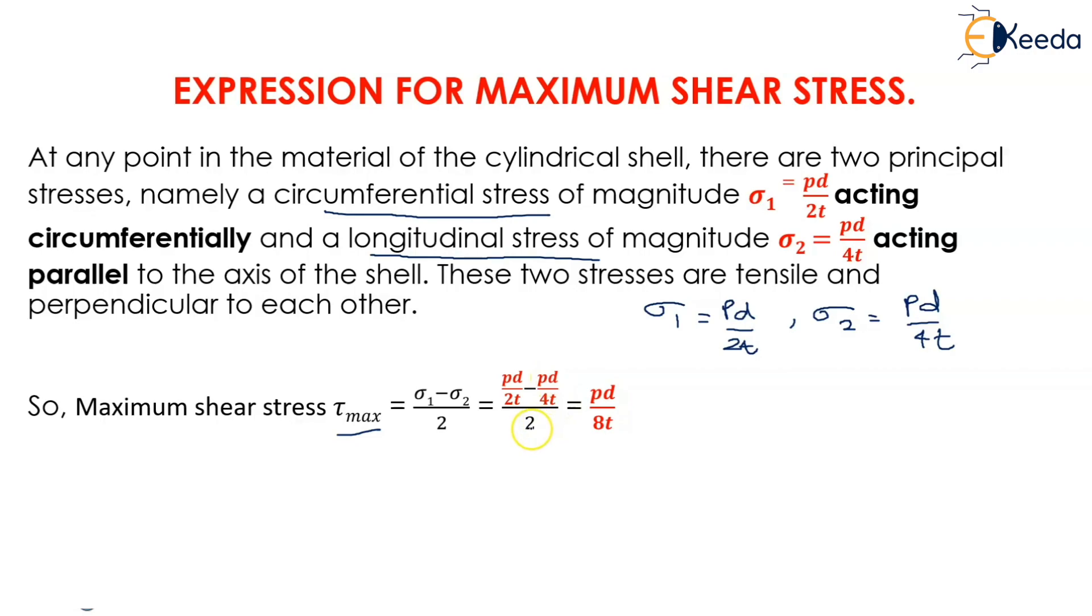Taking LCM over here, this becomes 2Pd minus Pd upon 4t multiplied by 2. So the resultant is Pd by 8t. Therefore, the maximum shear stress tau max is given by the expression Pd by 8t.